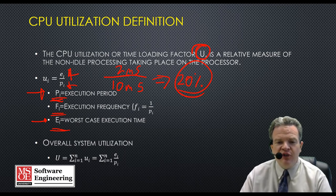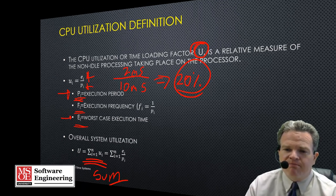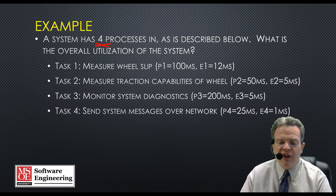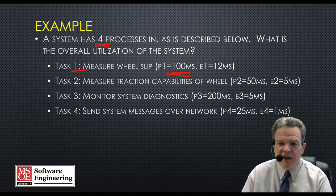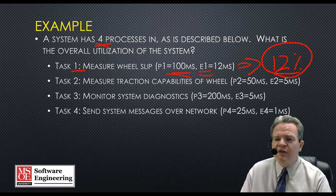Our overall system utilization is defined as the sum of all individual tasks running and what their utilization is. For example, in a system with 4 processes: task 1 measures wheel slip, has a period of 100 milliseconds and a worst-case execution time of 12 milliseconds — so it uses 12% of the CPU utilization.